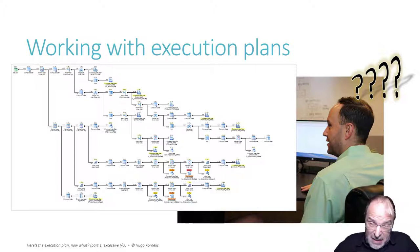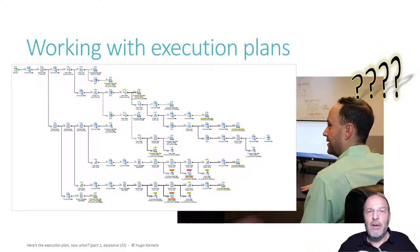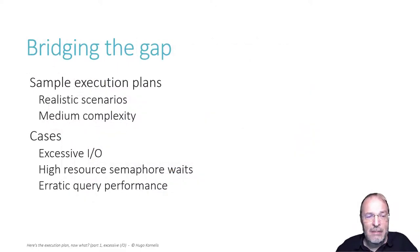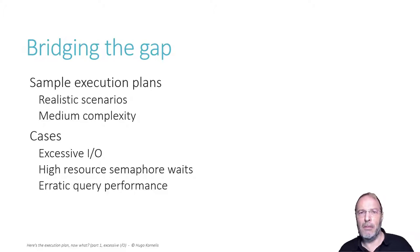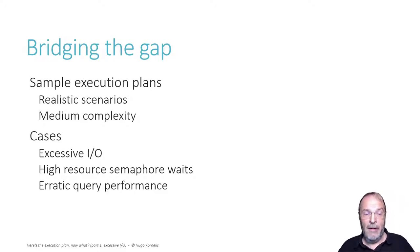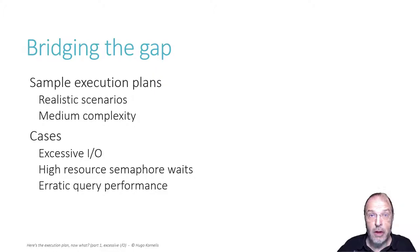This video — or rather this series of videos — is intended to bridge that gap, to get you from those very simplified classroom examples to reality, by doing examples that are somewhere in between. We will show sample execution plans for realistic scenarios: not completely simplified, but not too complex — a medium complexity — to get you one step closer to the reality of the execution plans you will see in your work. In this video I'm going to talk about the excessive IO case.